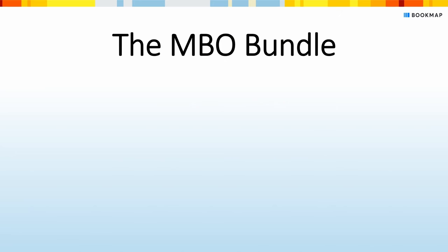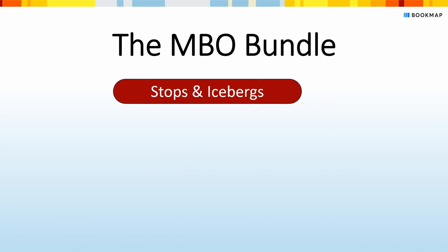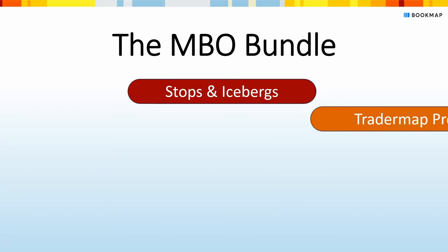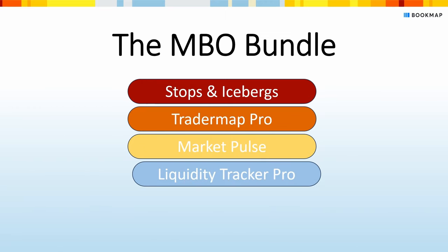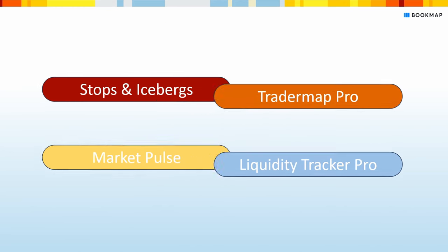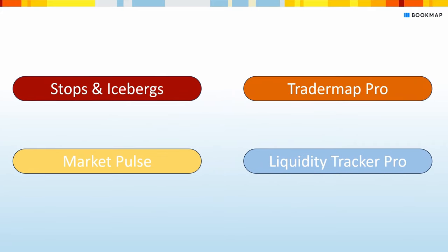You can still get the MBO bundle with Stops and Icebergs, TraderMap Pro, MarketPulse, and LiquidityTracker Pro. This is a great deal for those of you who are interested in more than one add-on. Or now, if you desire, you can get any of these add-ons separately.